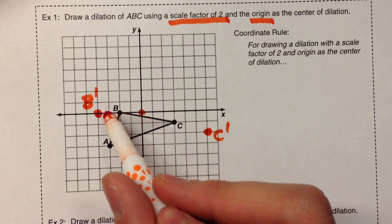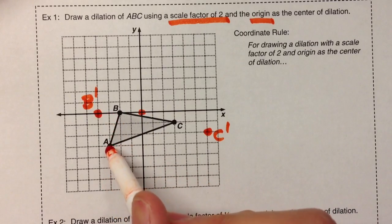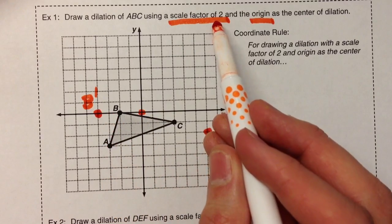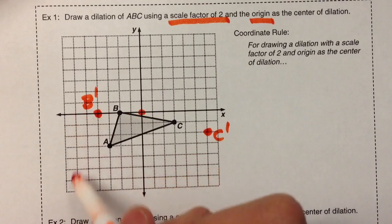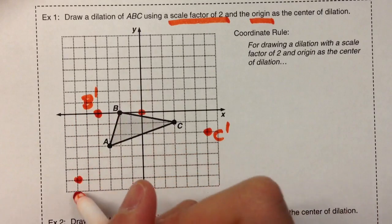A is three steps left and three steps down, multiply it by your scale factor of two, so instead of three by three, it's going to be six by six. There's your A'.